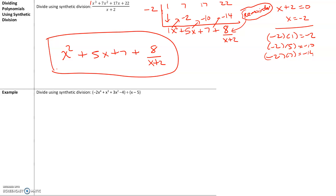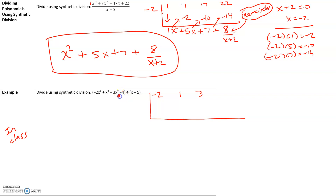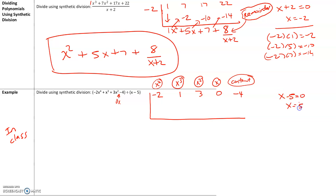The next example we have negative 2x to the fourth. We'll do this one in class, but let me help you set it up. We put all the coefficients inside: negative 2 for x to the fourth, 1 for x cubed, 3 for x squared. Notice that the x term is missing — so we put a 0 in the x's place. And then we have negative 4 as the constant. Make sure each exponent is represented. For the divisor x minus 5, set it equal to 0 to get x equals 5, so we divide by 5.